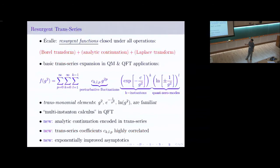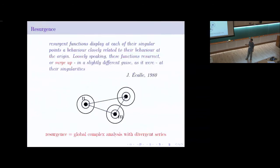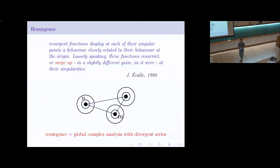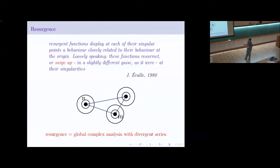So those are trans-series, the basic building blocks. Where does this word 'resurgence' come from? The basic idea: imagine you have some problem depending on some parameter, and there are special points — fixed points, singularities, saddle points. The idea is that you usually make an expansion around those special points: high temperature, low temperature, weak coupling, strong coupling, some singular point.